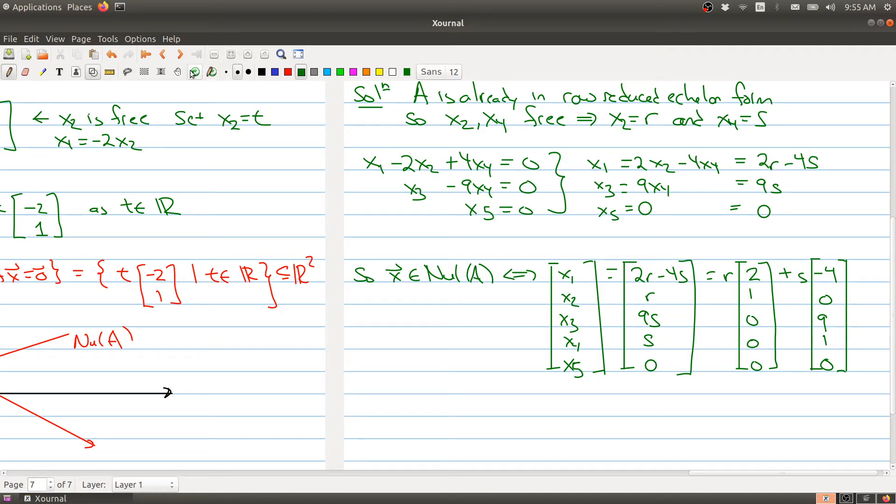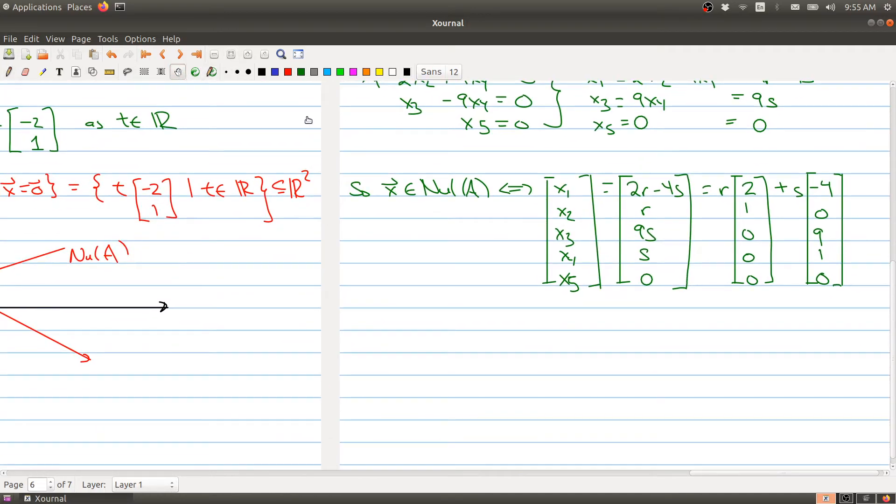Let's take a step back and notice that I've taken a vector x and I've written it as a linear combination of vectors. I've written it as a linear combination of two vectors. The R and the S can be any real numbers that I want. So in some sense, these things all belong to the span of these two vectors.